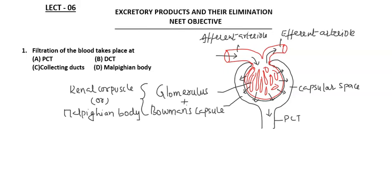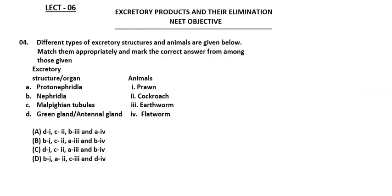So the ultrafiltration takes place in the Malpighian body, which is a combination of glomerulus and Bowman's capsule. The answer is Malpighian body. The next question is: match the following — different types of excretory structures and animals are given; match them appropriately.